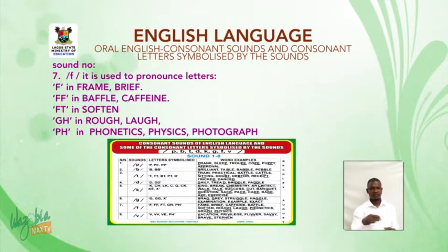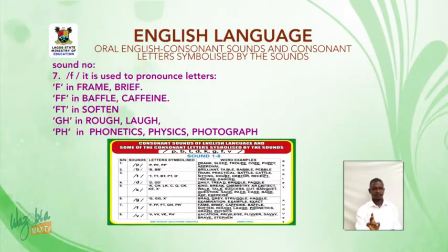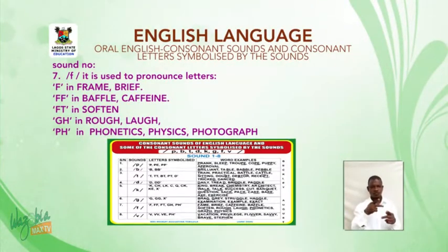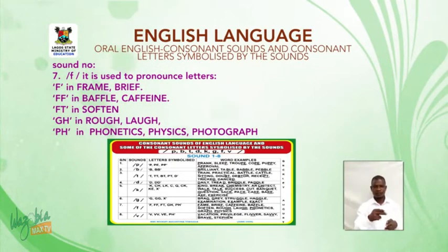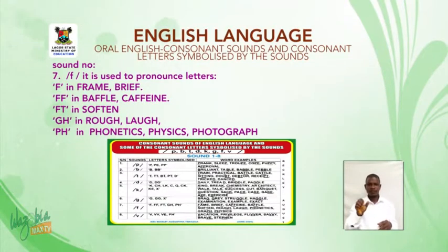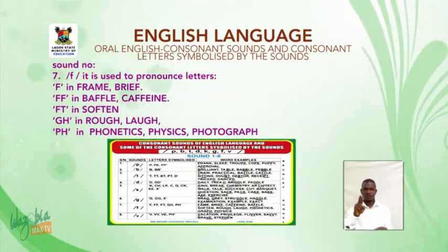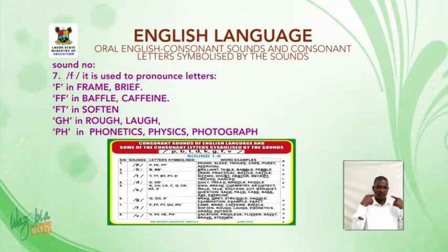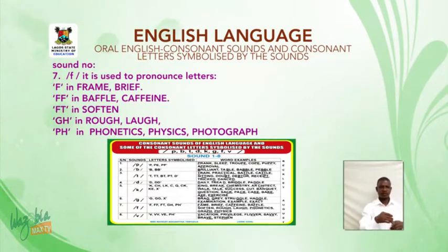Sound number seven: /f/. It is used to pronounce letters F in frame, brief; FF in baffle, caffeine; FT in soften; GH in rough, love; PH in phonetics, physics, photograph.